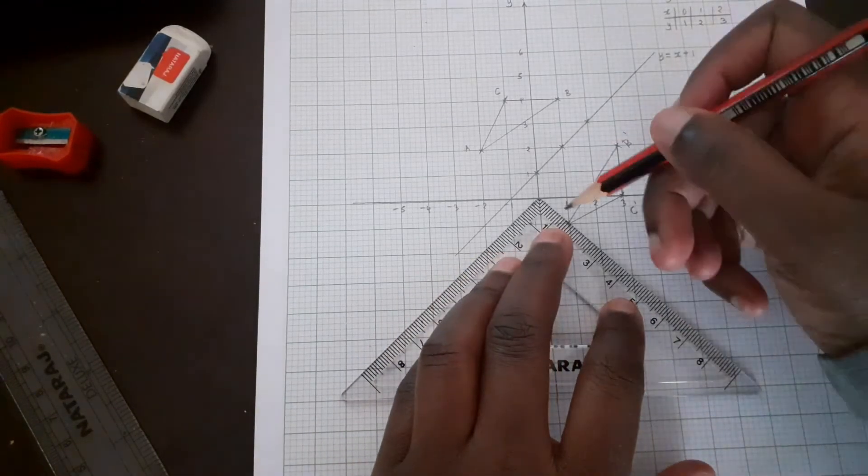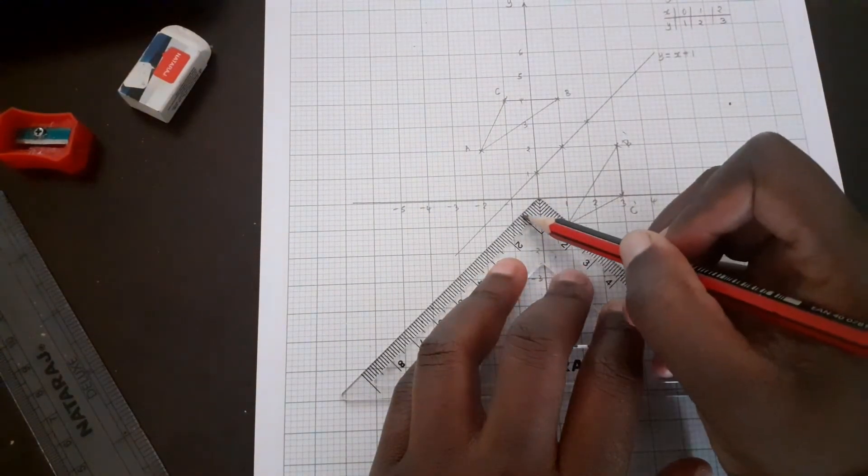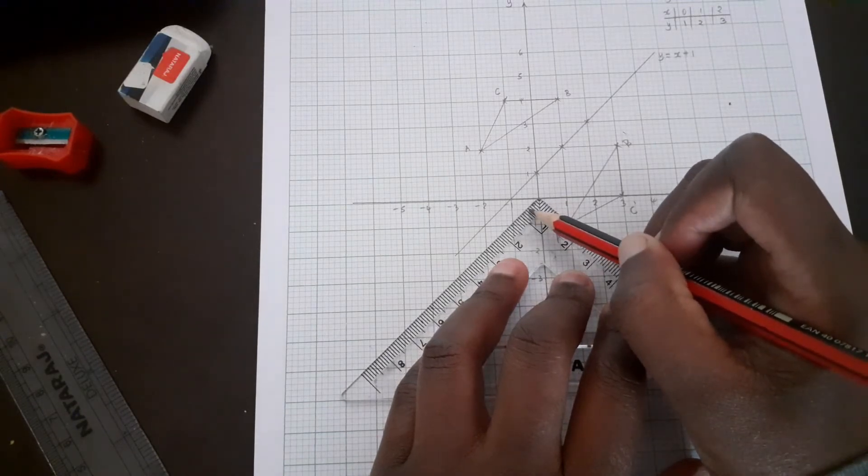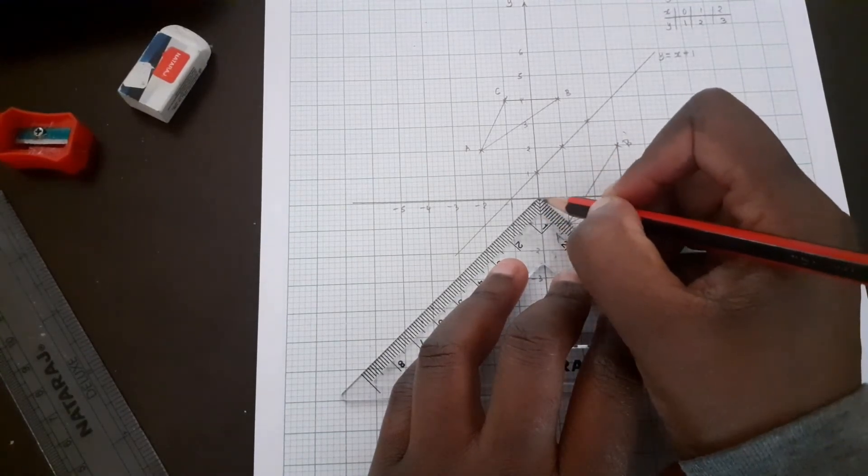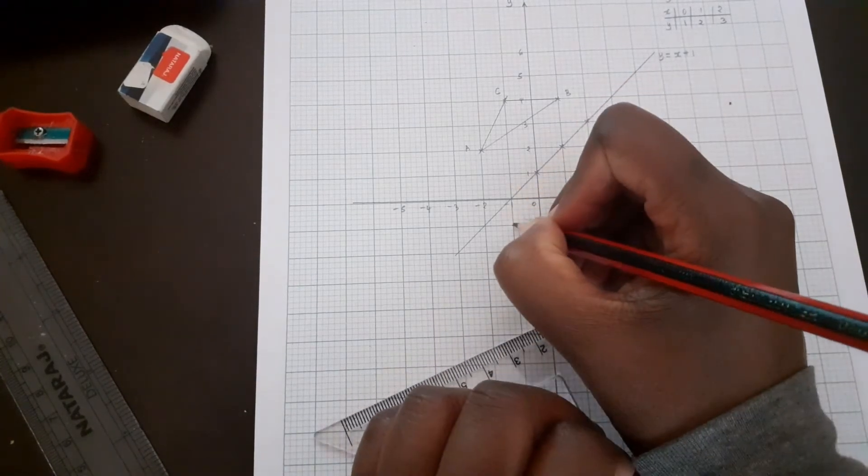So from point A, to map point A it moves 90 degrees towards the clockwise direction. So A will be 90 degrees - should be at this point. So this is our A''.